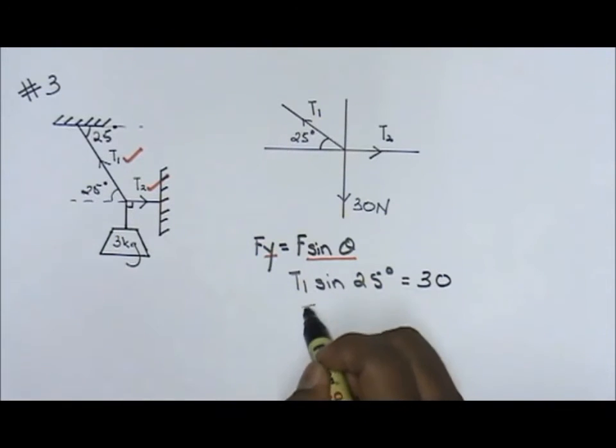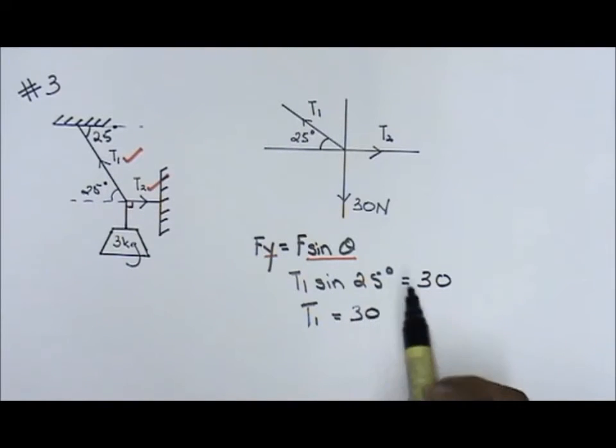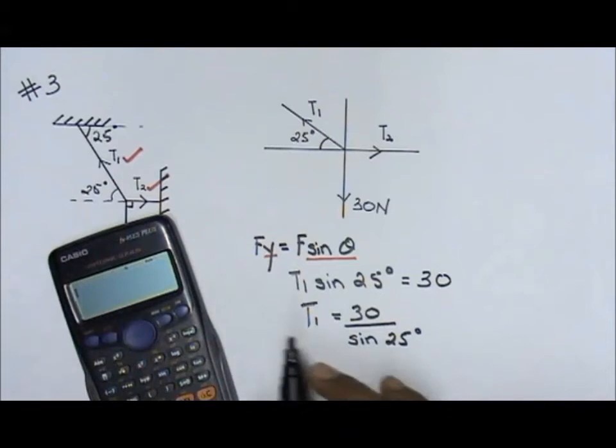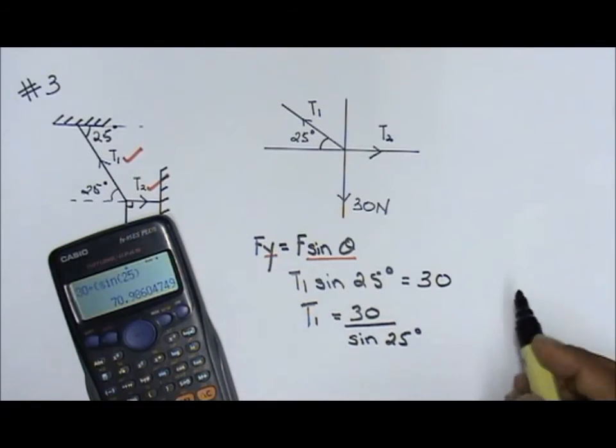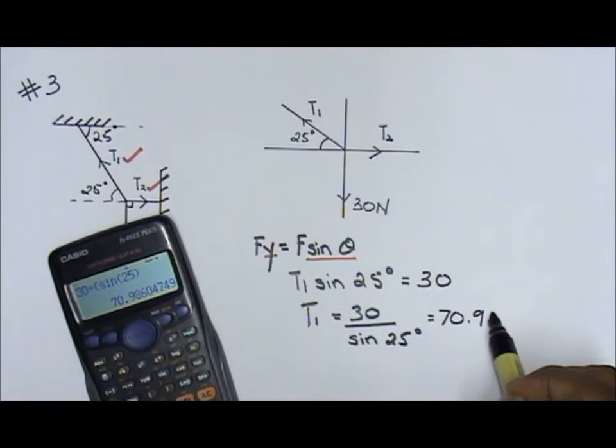Now, very easily, T1 equals to 30 divided by sine 25 degrees. So, using your calculator, 30 divide sine 25. You will get 70.98, I'll just put it 99, 70.99 newtons.